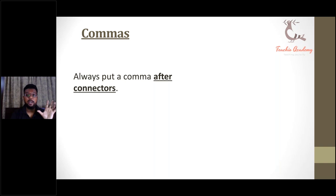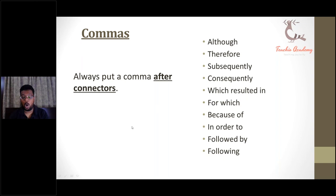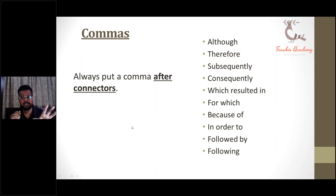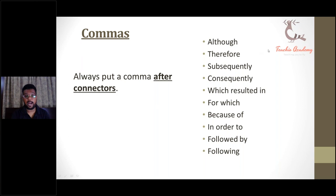Always put a comma after these connectors: although, therefore, subsequently, consequently, which resulted in, for which, because of, in order to, followed by, following. Whenever you use these connectors in your OET writing, always put a comma after the connector. There are some connectors before which the comma is placed — but for these connectors shown on screen, you place commas after them.